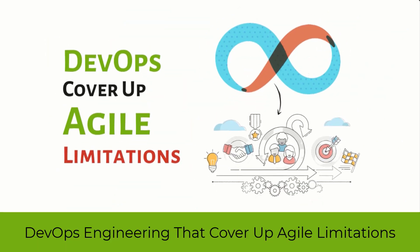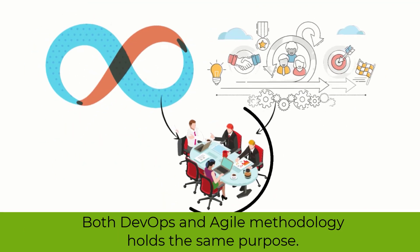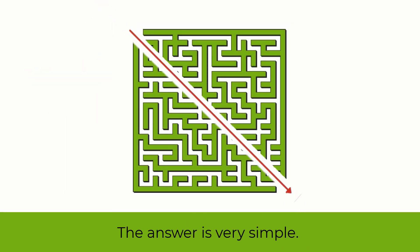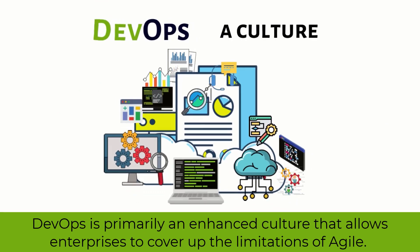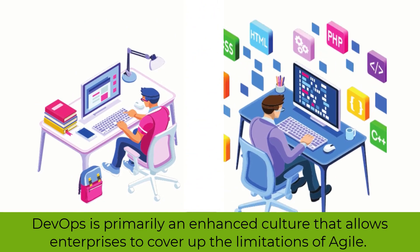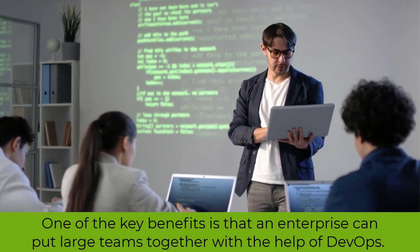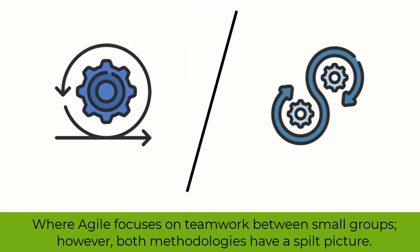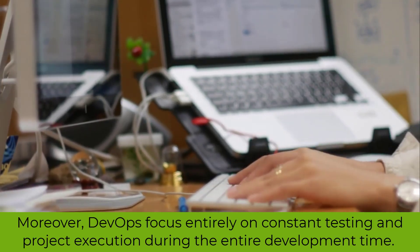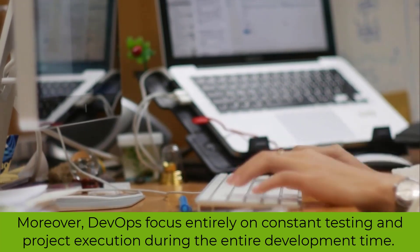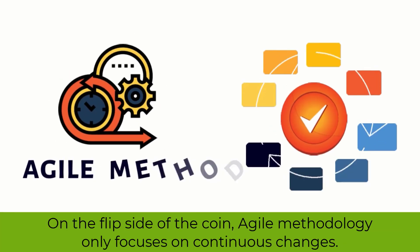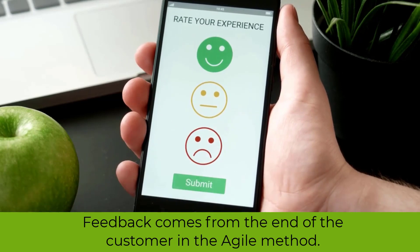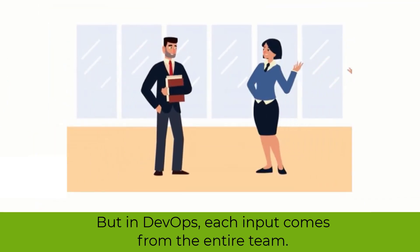DevOps engineering covers up agile limitations. Both DevOps and agile methodology hold the same purpose. But why do companies incorporate the DevOps culture? The answer is very simple. DevOps is primarily an enhanced culture that allows enterprises to cover up the limitations of agile. One of the key benefits is that an enterprise can put large teams together with the help of DevOps. Where agile focuses on teamwork between small groups, both methodologies have a split picture. Moreover, DevOps focuses entirely on constant testing and project execution during the entire development time. On the flip side, agile methodology only focuses on continuous changes. Feedback comes from the customer in the agile method, but in DevOps, each input comes from the entire team.